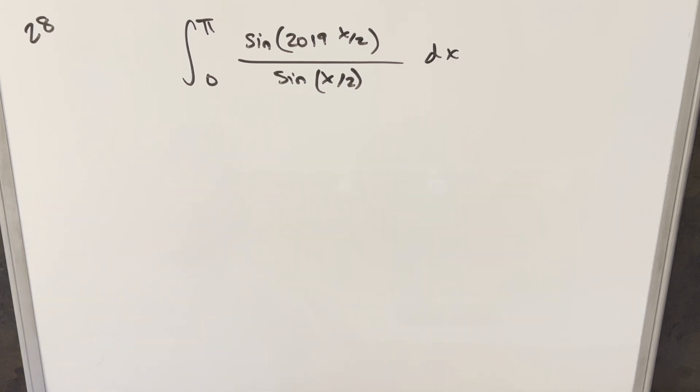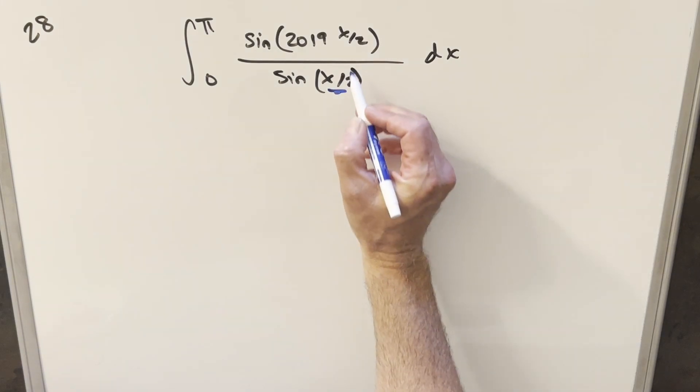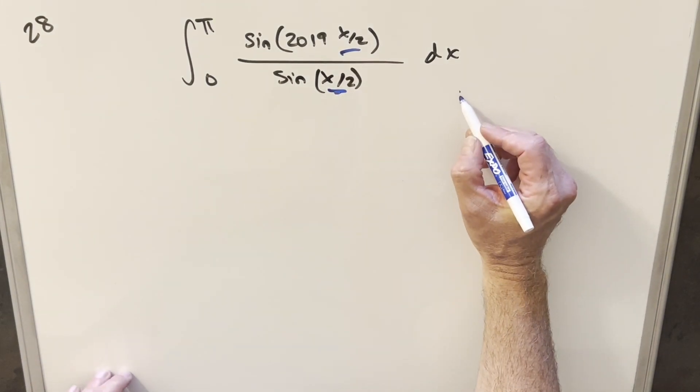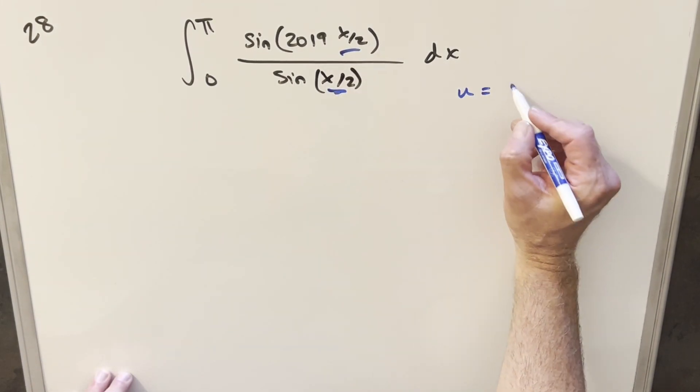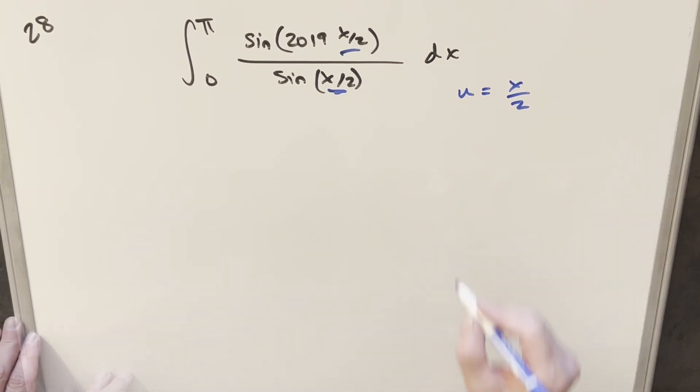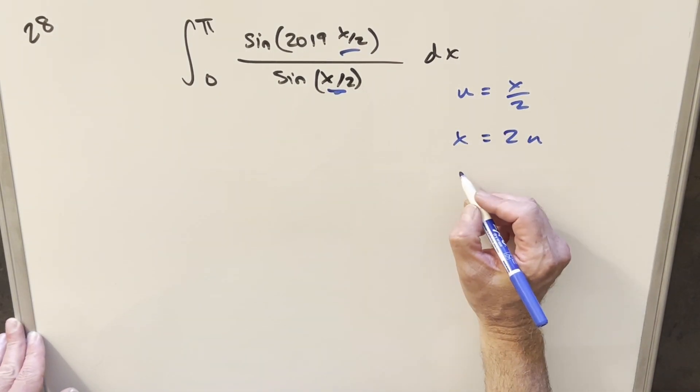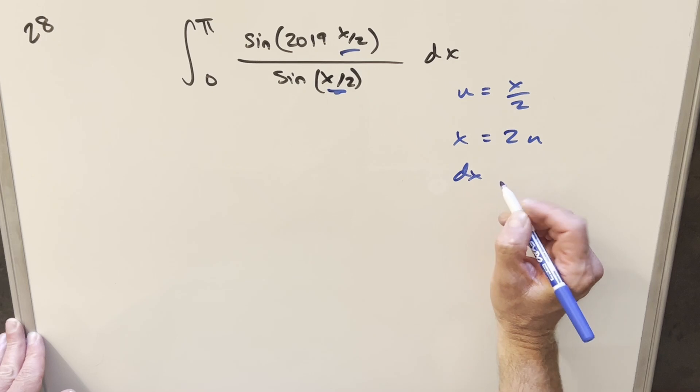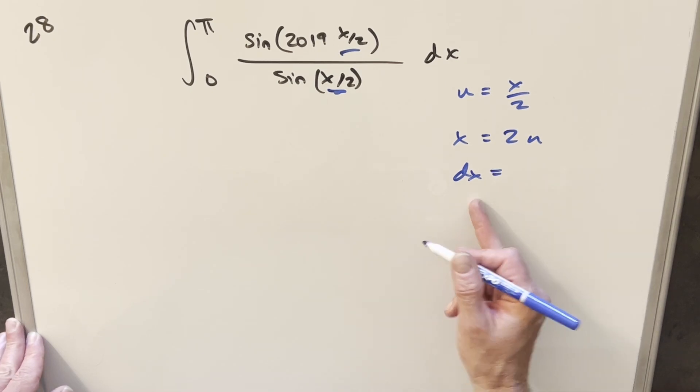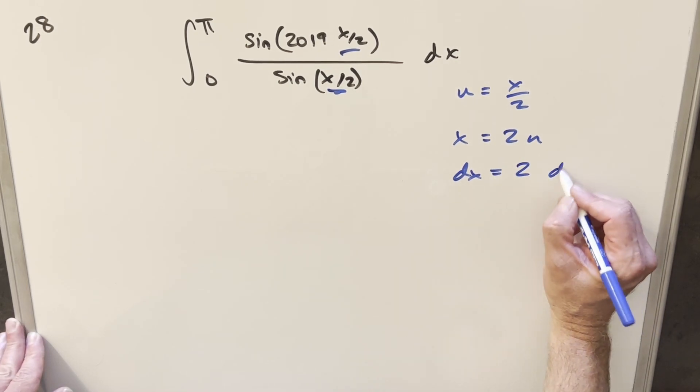Now this is a problem I actually did before about a year ago using the Dirichlet kernel, and recently I came across a different way to do it. Still pretty similar, but I thought it was an interesting variation. For my first step, I want to clean up the half angles. So I'll do a u substitution with u equal to x over 2. Solving for x, we have x equal to 2u. Taking the derivative to get our dx value, dx is going to be 2du.